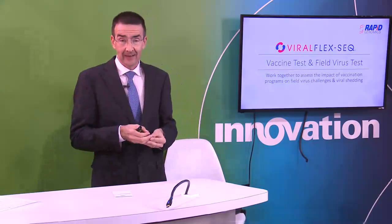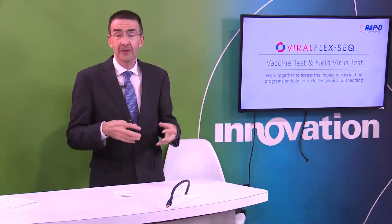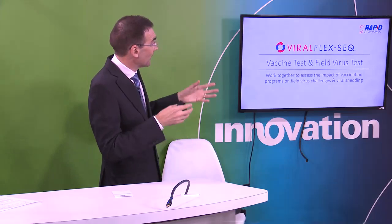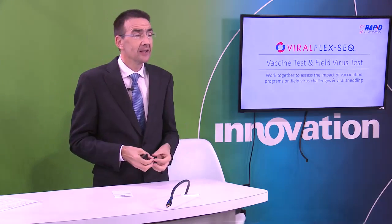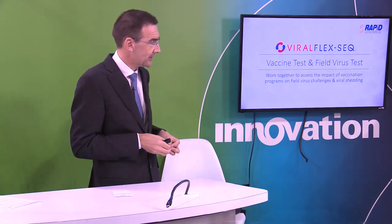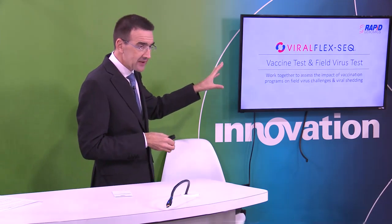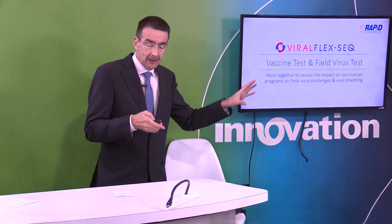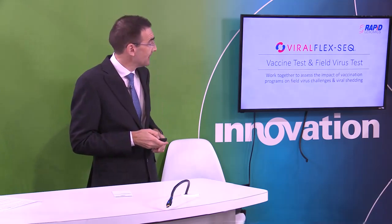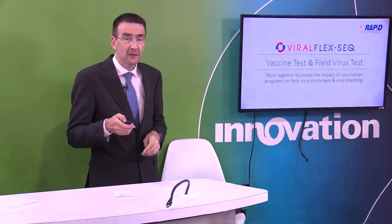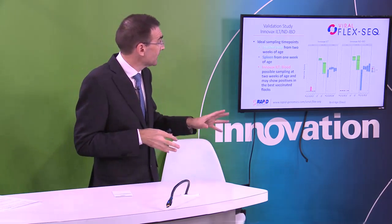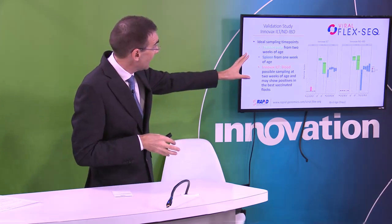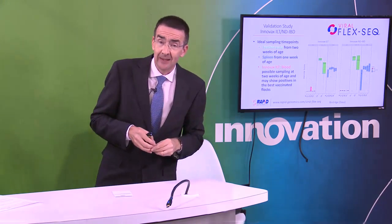If we roll this together, how does the rubber hit the road as it were? The combination of vaccine tests and field virus tests to better understand the clinical situation. The first thing we did with the MSD research facilities in the Netherlands was to define where we should sample, and what we did was we looked at Innovax ILT and Innovax NDIBD.